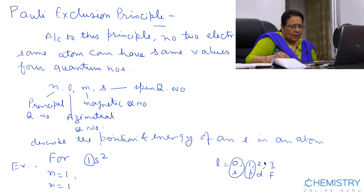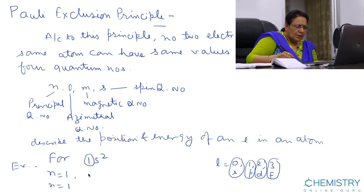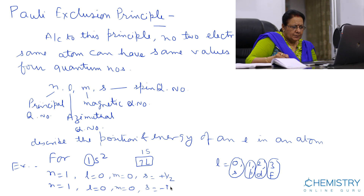If the electron is present in the D subshell, then the value of L is 2. If in F subshell, then L is 3. In this case, both electrons are present in the S subshell, so L is 0. If L is 0, then M is 0. For the first electron, spin is plus half, and for the other electron, spin is minus half.